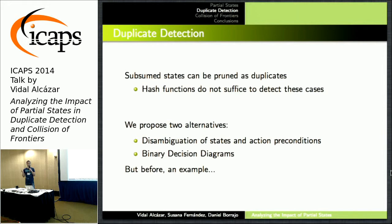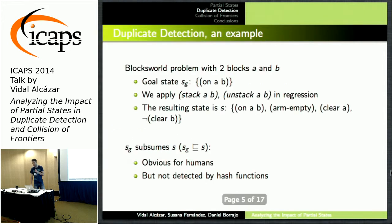For this, we're going to try two alternatives: first, disambiguation of states, and second, binary decision diagrams. I'm going to go over a small example just so you can see what this looks like.